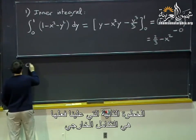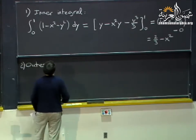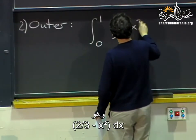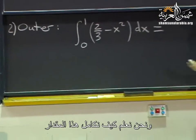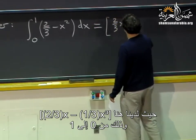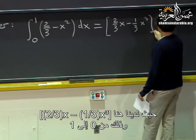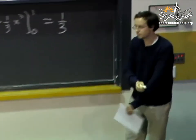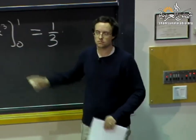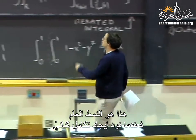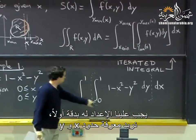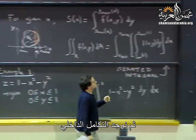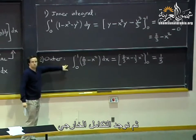Now I do the outer integral: the integral from 0 to 1 of (2/3 − x²) dx. That integrates to 2/3·x − 1/3·x³ evaluated between 0 and 1, giving the final answer of 1/3. The general pattern is: set up the bounds carefully, compute the inner integral, then compute the outer integral.